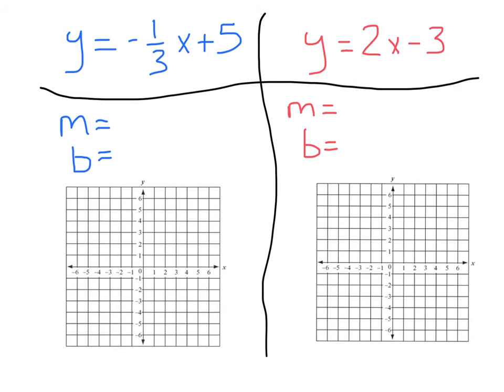All right, I know you're going to be mad at me if we don't do a couple more examples. So, here we go. Y equals negative one-third X plus five. First, our M, our slope, is negative one-third. And our Y intercept, our B, is five.